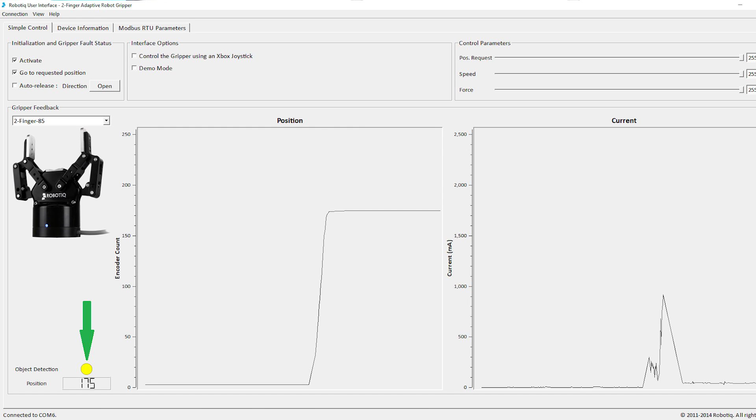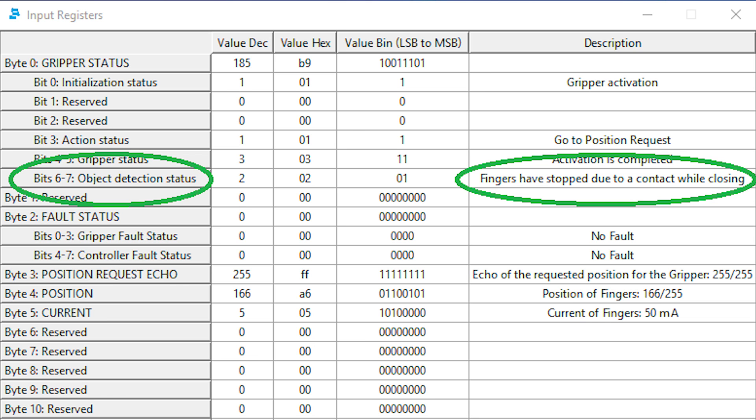Normally, you will need to read the gripper registers to get that status, but with the Universal robot, you can just use the object detection functions.